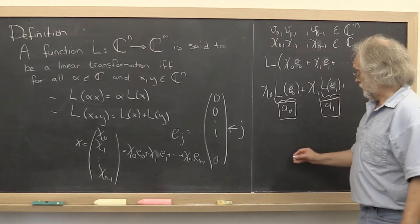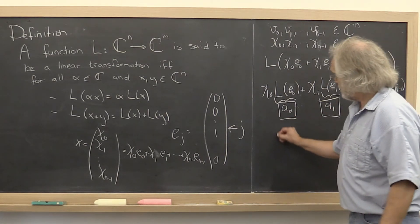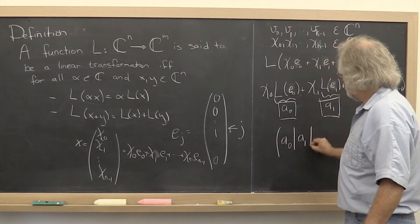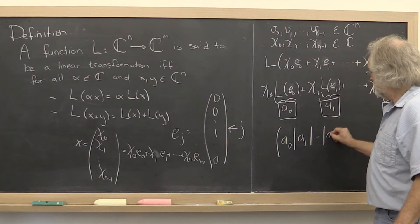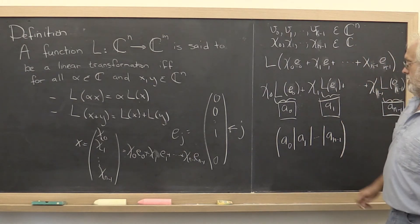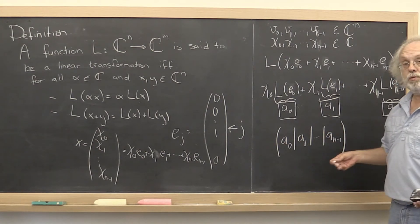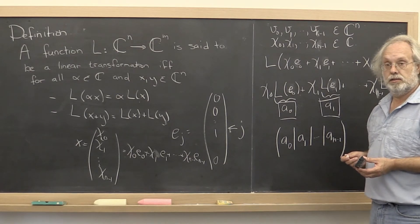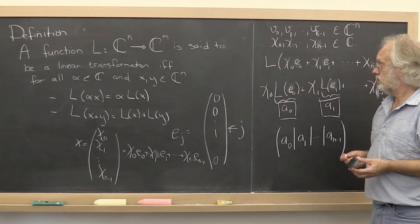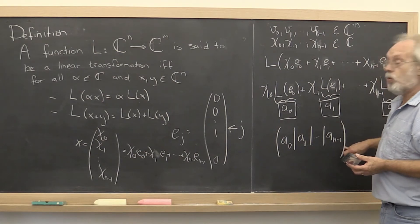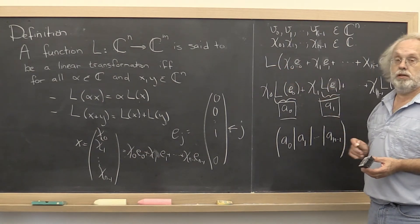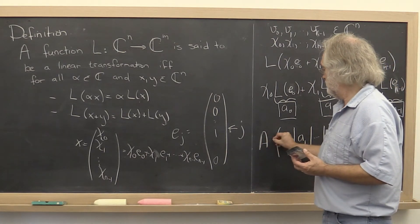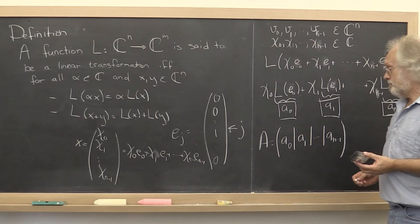What we can then do is take all of those vectors and make them the columns of a two-dimensional array. That two-dimensional array of numbers now encodes everything you need to know about L. This here now we call the matrix associated with the linear transformation, and we can give it a name. We can call it A.